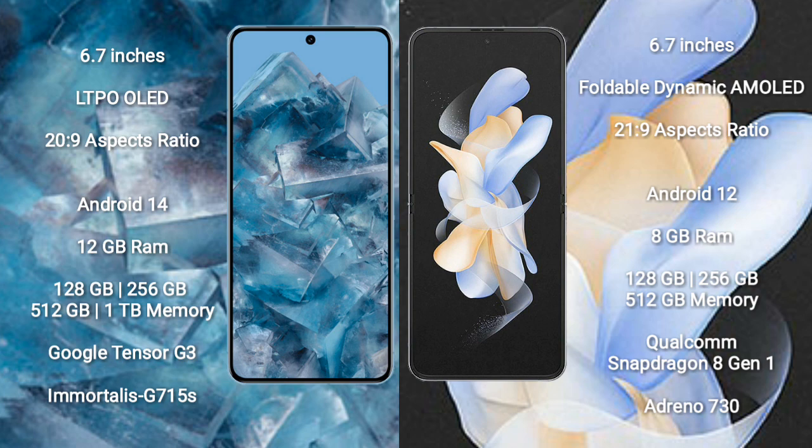Google Pixel 8 Pro comes with 12GB RAM and 128GB, 256GB, 512GB, or 1TB internal storage. It features the Google Tensor G3 processor and GPU G715S.